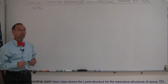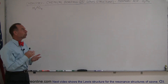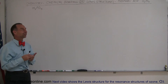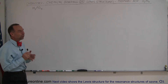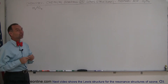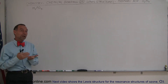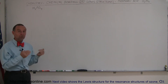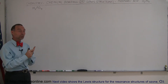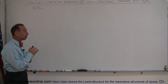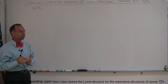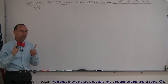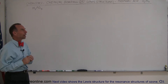Here's a really good example of how to draw the Lewis structure for phosphoric acid. The reason I picked this example is because there are actually different ways you can draw the Lewis structure, and both ways will satisfy the octet rule and the number of valence electrons being used. But one is a preferable structure over another, and we'll see in just a moment why that is.